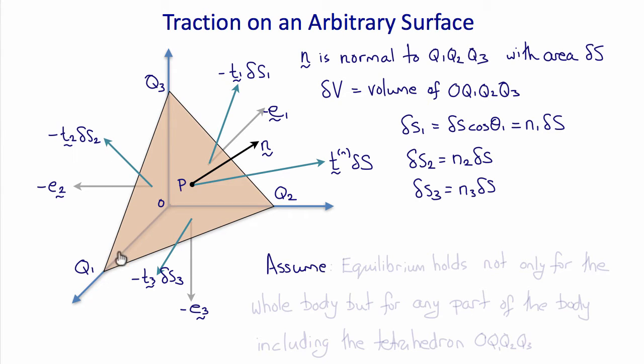Now, let's assume that equilibrium holds not only for the body as a whole, but for any individual small part of the body, including the arbitrary tetrahedron O, q1, q2, and q3.